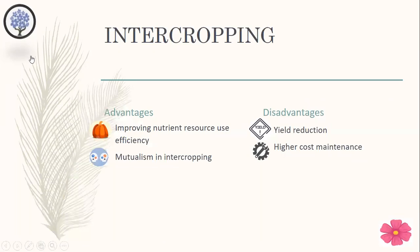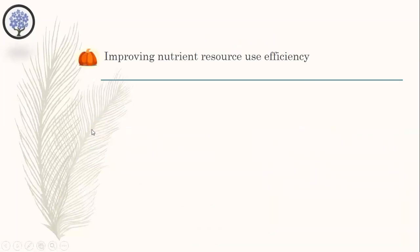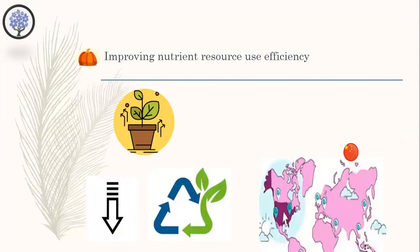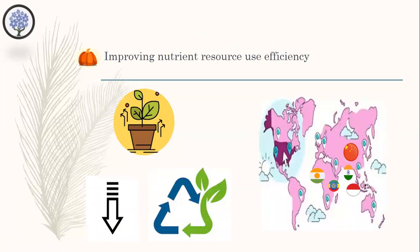Now I'm going to explain the advantages and disadvantages of intercropping. The first advantage of intercropping is improving nutrient resource use efficiency. This is to ensure food security by increasing yields while reducing environmental impact. Developing countries like China, Ethiopia, India, Indonesia, Mali and Niger have paid considerable attention to enhancing productivity through intercropping. There is a very close relationship between yield advantage and nutrient uptake in the intercropping system.